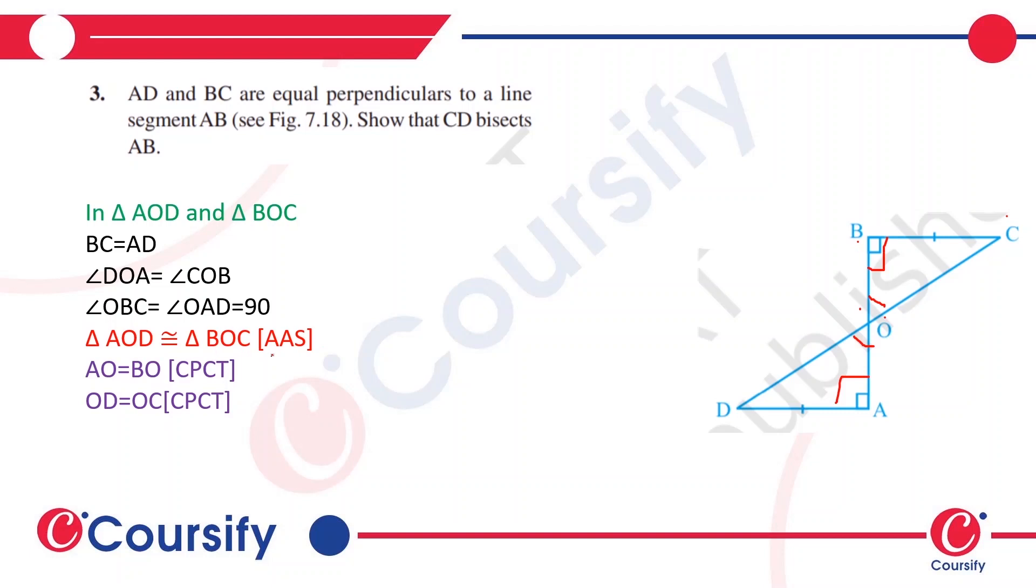So using the AAS rule, we get that triangle AOD is congruent to triangle BOC.